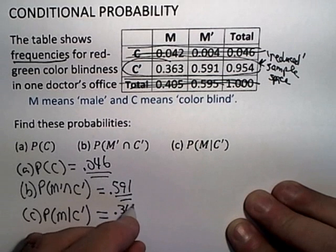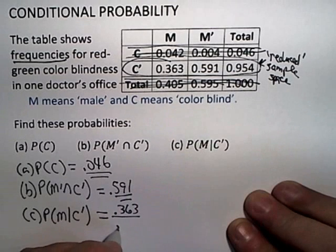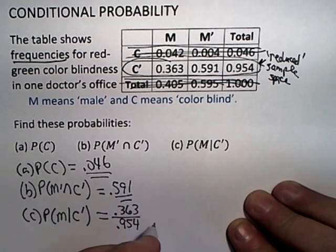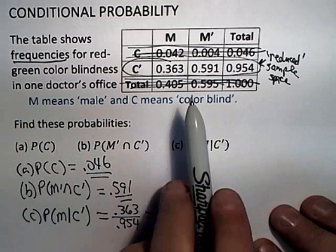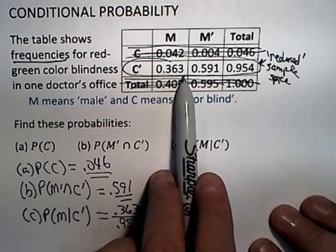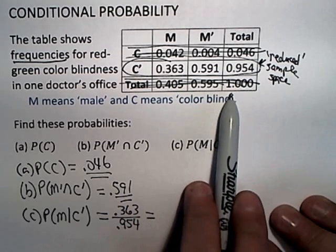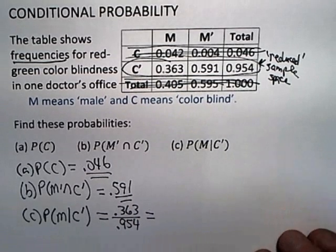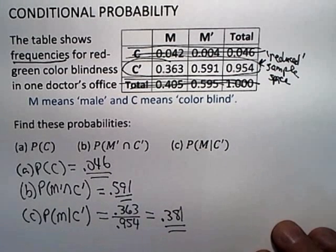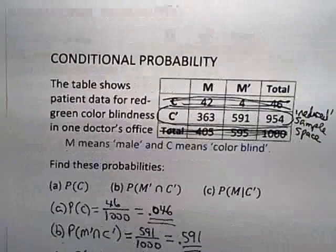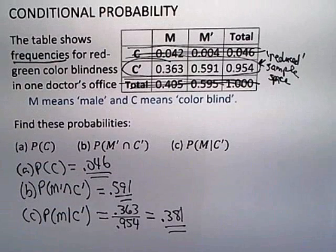So again it's a little tricky. Instead of getting 0.363 for the answer, when I do a conditional probability with frequencies I've got to divide by the total, which is basically just telling me that I'm working with the reduced sample space instead of the original sample space. If I wrote 0.363 as my final answer I would be assuming I still have 1,000 patients in the sample space, but I don't. And if you do that as a decimal you get 0.381, which again is the same answer we got before when we were using the actual raw numbers instead of the frequencies.